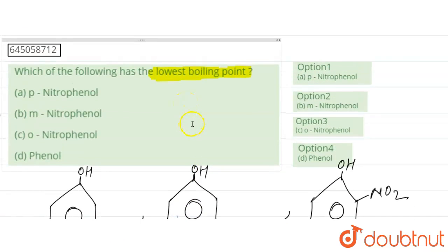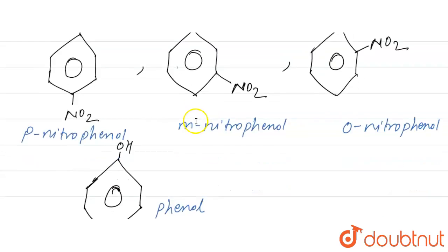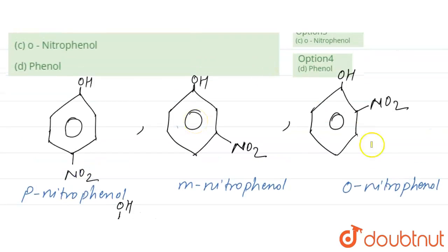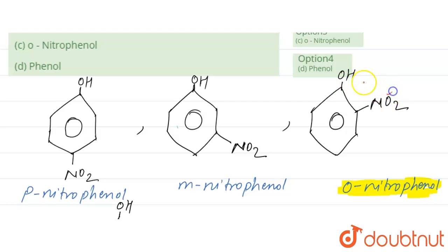Now, which has the lowest boiling point? If we check ortho-nitrophenol, there is intramolecular hydrogen bonding present. The H of the OH group forms hydrogen bonding with the oxygen of the NO2 group within the same molecule — this is called intramolecular hydrogen bonding.